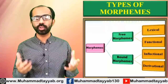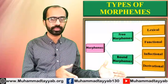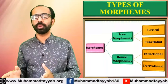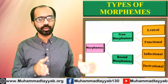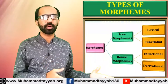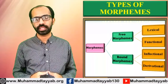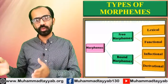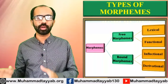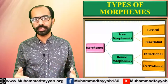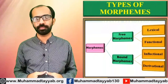Morpheme is the smallest meaningful unit and it is of two types. One of them is free morpheme and the other is bound morpheme. Free morphemes have two types: lexical morpheme and functional morpheme. Similarly, bound morphemes have two categories: derivational morpheme and inflectional morpheme.